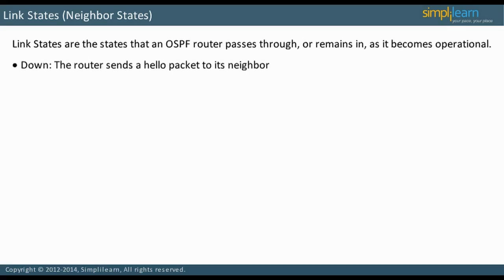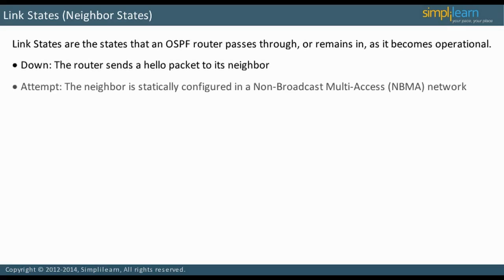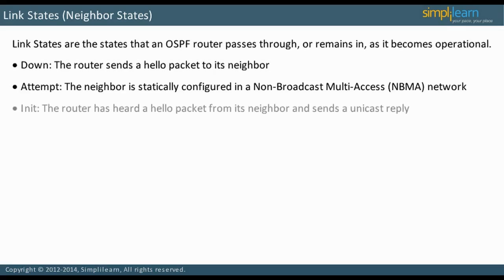The ATTEMPT state occurs only when the neighbor is statically configured and in a non-broadcast multi-access, NBMA, network. An interface is in the ATTEMPT state after it has sent a hello, but before it has received a hello from its neighbor.